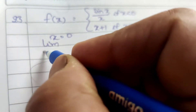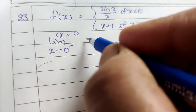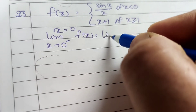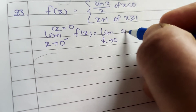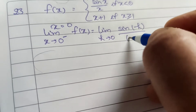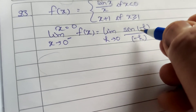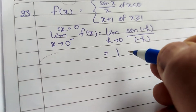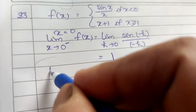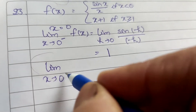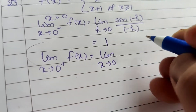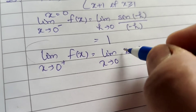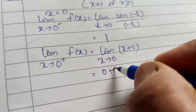For x equal to 0, the left hand limit as x tends to 0 negative: the function is sin x upon x. We write x equal to minus h, so limit h tends to 0 of sin(minus h) upon (minus h) equals minus sin h upon minus h, which equals 1. The right hand limit as x tends to 0 positive: the function is x plus 1, so limit equals 0 plus 1 equals 1.